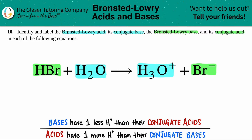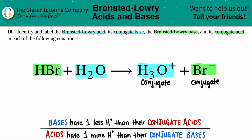It's the corresponding base to the acid that you had on the left-hand side. So H₃O⁺ is going to be a conjugate, and Br⁻ is also going to be a conjugate. On the flip side, the actual Brønsted-Lowry acid and base are always the reactants. So HBr has to be a Brønsted-Lowry something, and H₂O is also a Brønsted-Lowry something — we'll know which in a moment.